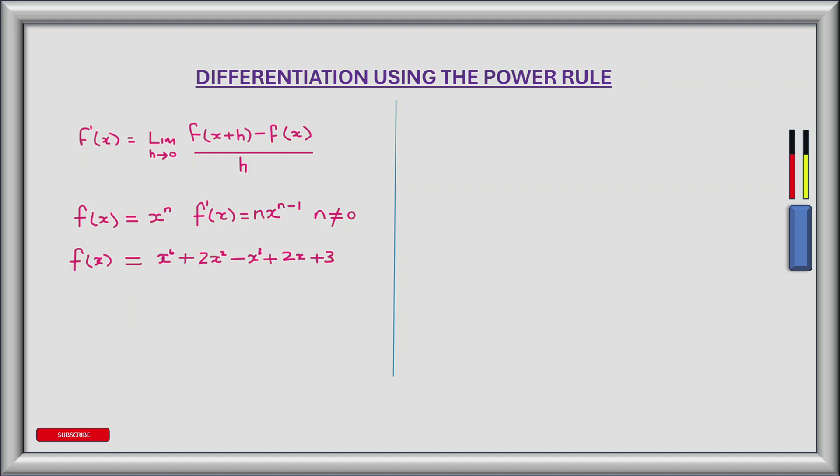So we have a function f of x equal to x to the power of 6, plus 2x squared, minus x cubed, plus 2x, plus 3. We can apply the power rule to each of the terms individually to get the complete derivative.